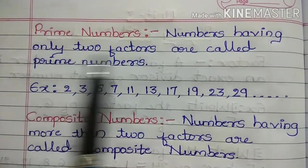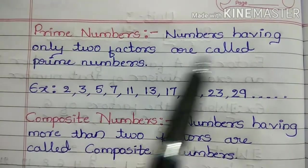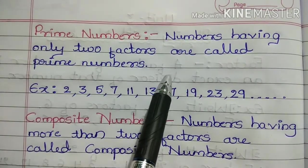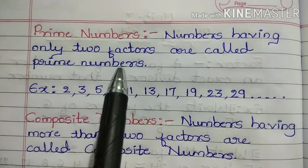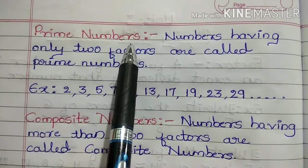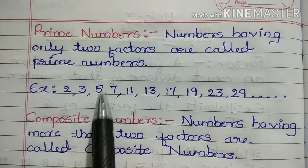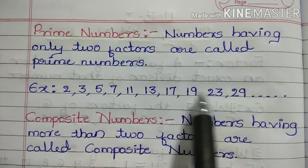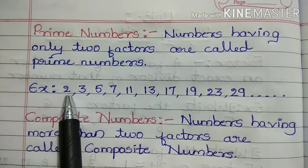Next one is prime numbers. Numbers having only two factors are called prime numbers. We already learned what factors are. Which are the numbers having only two factors? Those numbers are called prime numbers. For example: 2, 3, 5, 7, 11, 13, 17, 19, 23, 29, and so on. See here, children.